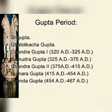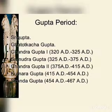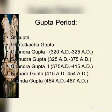Next is Chandra Gupta II. He was the first Gupta ruler to issue silver coins, and he extended the limits of the empire by marriage alliance and conquest. He married Kuberanaga of the Naga dynasty and married his daughter Prabhavati to Vakataka prince Rudrasena II. He adopted the title of Vikramaditya and was also called Shiva Vikrama. Ujjain appears to have been made the second capital by Chandra Gupta II.